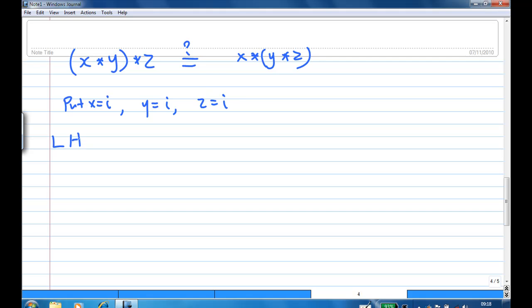Start from the left hand side. Left hand side is i star i star i. Now let's do the multiplication in the bracket first. i star i is i times conjugate of i. Now conjugate of i is minus i. So i times minus i, which will give you 1. So you get 1 star i. And 1 star i is 1 times conjugate of i, which is minus i.